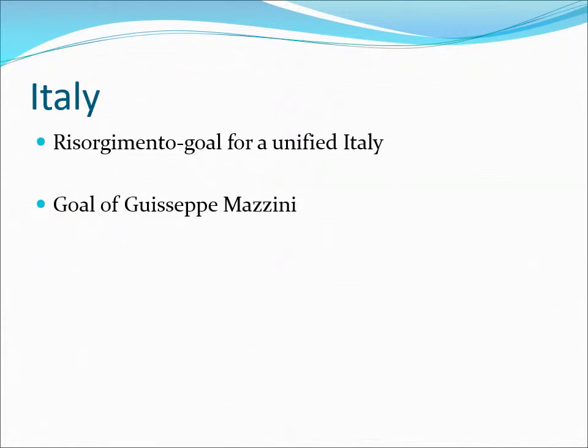Italy was last unified in the 5th century, when the Roman Empire fell in 476. Italy and the rest of Europe was overrun by Germanic barbarian tribes who conquered territory and created their own kingdoms, dividing Italy into numerous small kingdoms. It had been fragmented economically and politically for centuries.